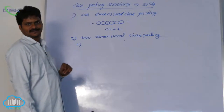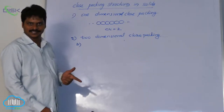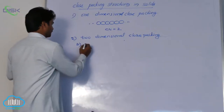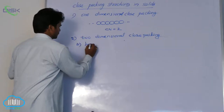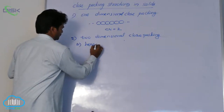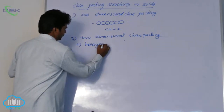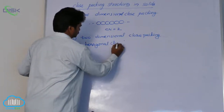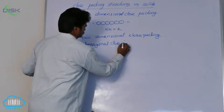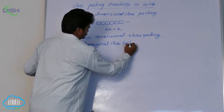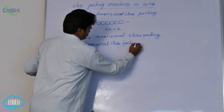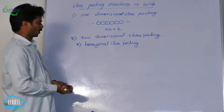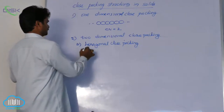Two dimensional close packing. The first one is square close packing. The second one is hexagonal close packing.